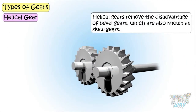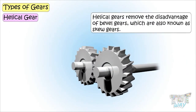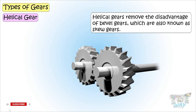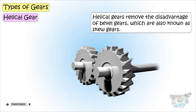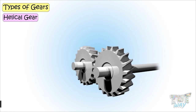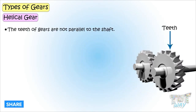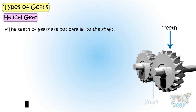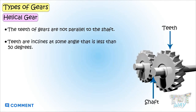Helical gear. Helical gears remove the disadvantage of bevel gears and they are called skew gears. In helical gears, the teeth of gears are not parallel to the shaft. Teeth are inclined at some angle which is less than 50 degrees.